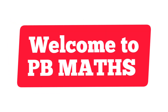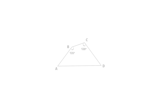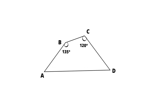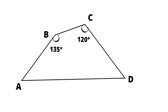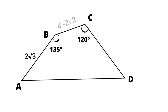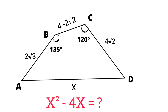Hello everyone, welcome to PB Maths. In the diagram, ABCD is a quadrilateral such that angle ABC equals 135 degrees and angle BCD equals 120 degrees. Moreover, AB equals 2 root 3 cm, BC equals 4 minus 2 root 2 cm, CD equals 4 root 2 cm, and the length of AD equals x. What would be the value of x squared minus 4 times x? This question is taken from Singapore Maths Olympiad 2011.